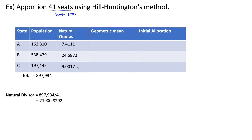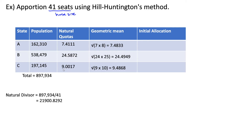The next thing we need to do is find the geometric mean for each natural quota. State A had a quota of 7.4111, so its geometric mean is the square root of 7 times 8. State B had a natural quota of 24.5, so its geometric mean is the square root of 24 times 25. State C has a natural quota of 9.0, so its geometric mean is the square root of 9 times 10.